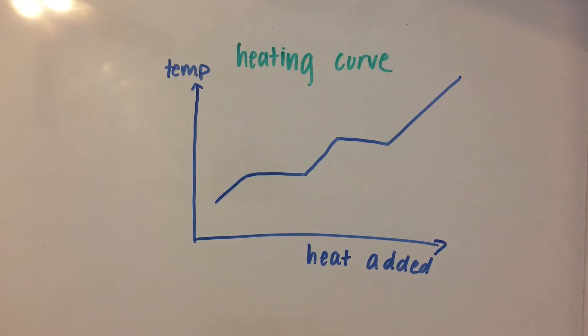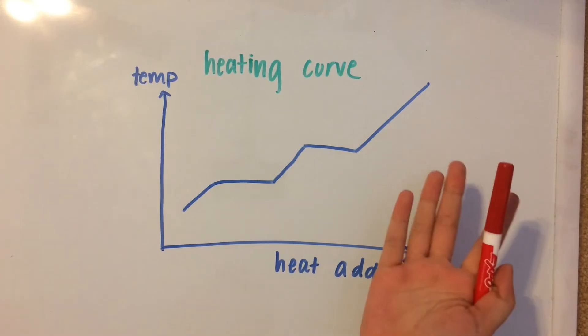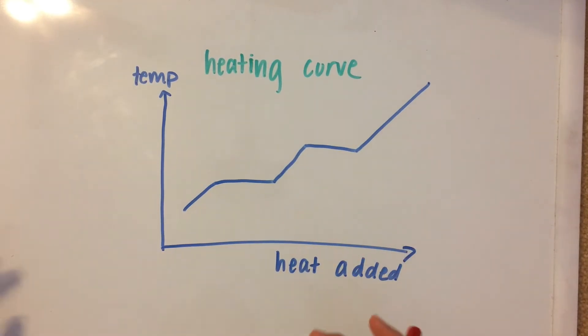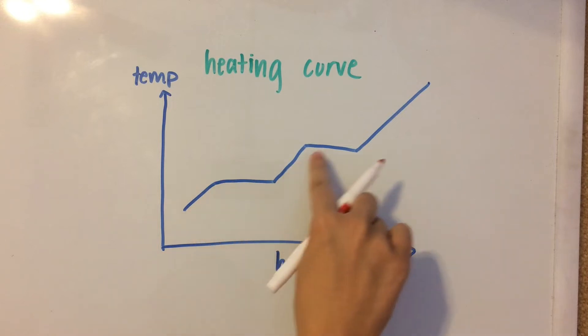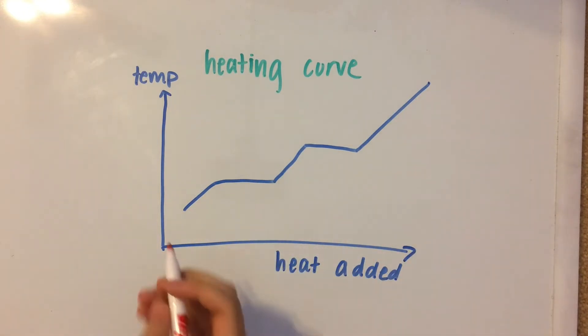So, this is what a heating curve looks like, and instead of having temperature on the x-axis and pressure on the y-axis, we now have heat added and temperature. So, when you look at this for the first time, it's kind of like, what is this? So, let me just explain what each of these sections are.